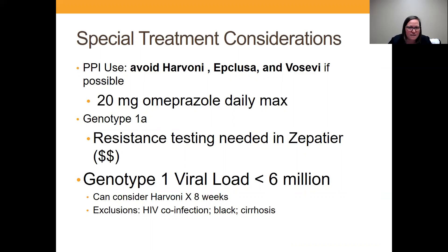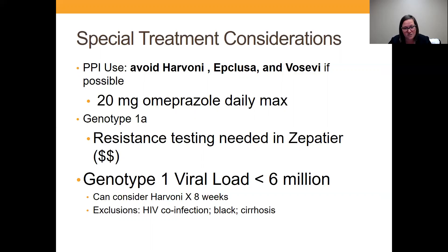Genotype 1A is another special consideration. If you want to use Zepatir for this patient, you would need resistance testing, which costs about $400 to $500. For genotype 1 patients who have a viral load less than 6 million, you can potentially use Harvoni for eight weeks. However, you cannot use the eight-week course if the patient has HIV infection, cirrhosis, is treatment-experienced, or is Black — in any of those populations, you still need the 12-week course of Harvoni.